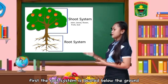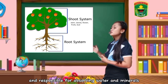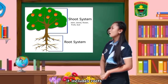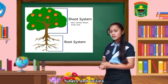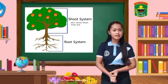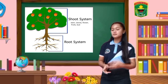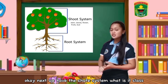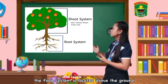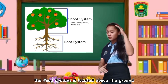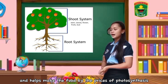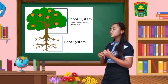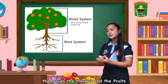First, the root system is located below the ground and is responsible for absorbing water and minerals. It includes roots, tubers, and rhizomes. Next, we have the shoot system. The shoot system is located above the ground and helps make food through the process of photosynthesis. It includes the stem, the leaves, the flowers, and the fruits.